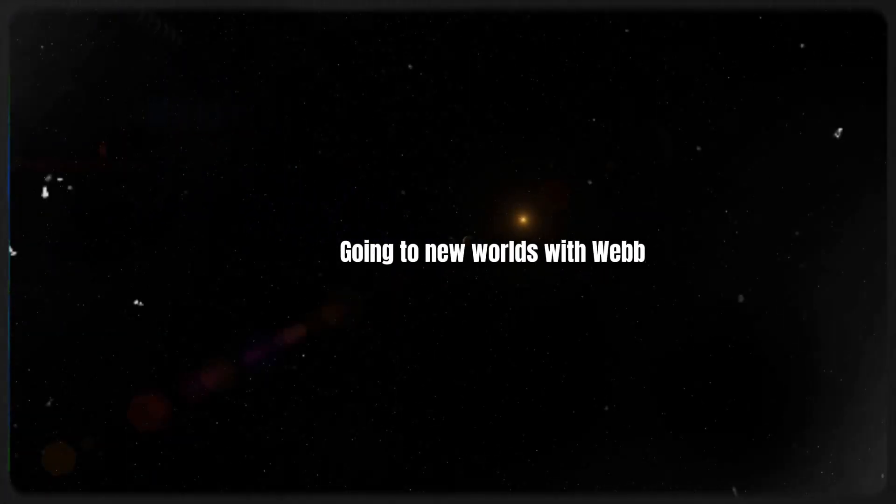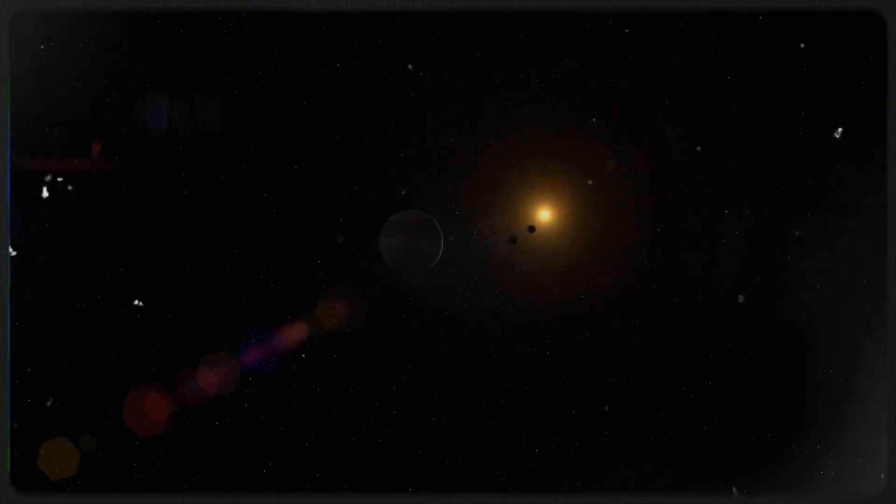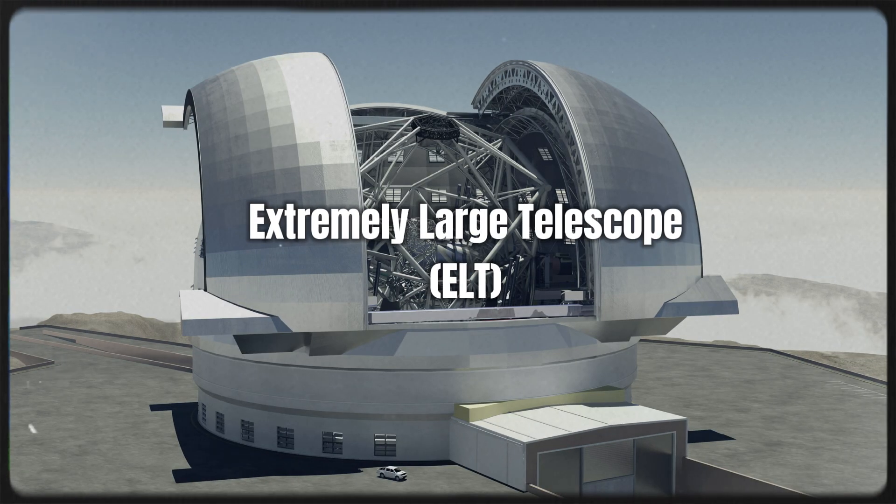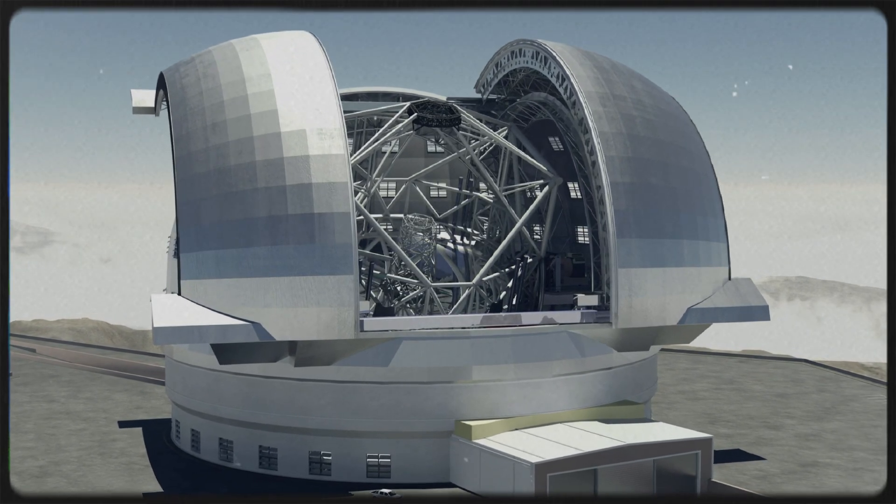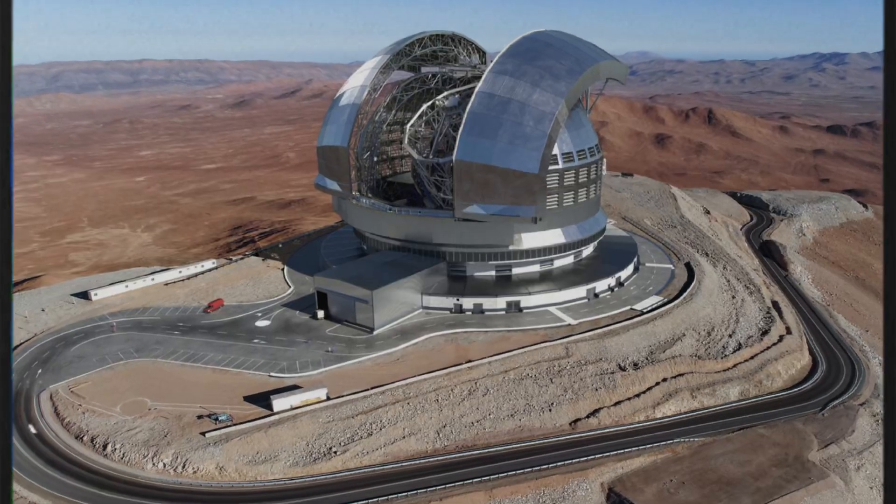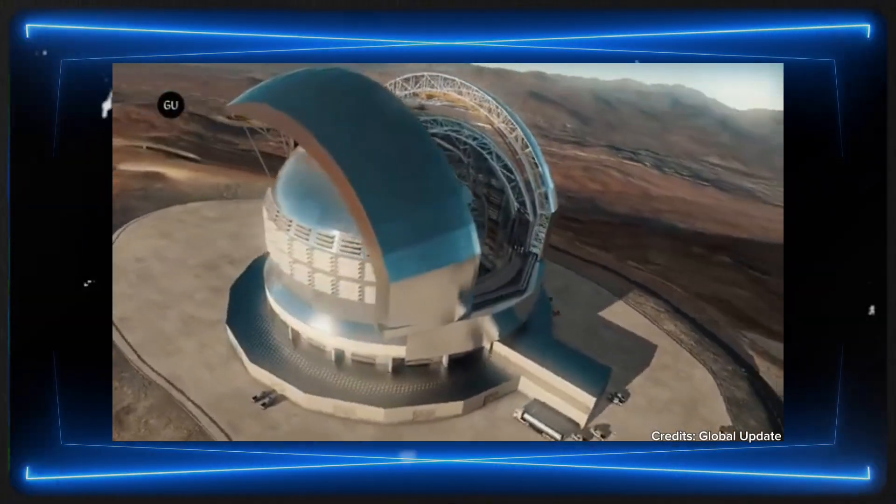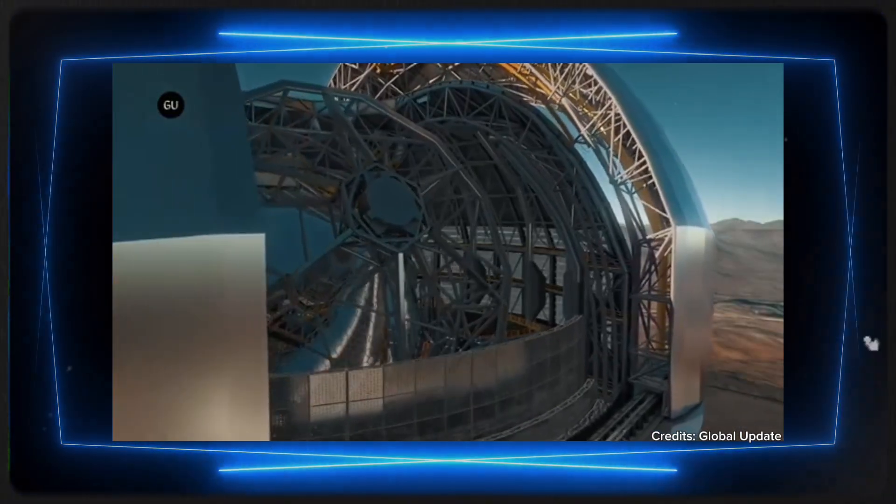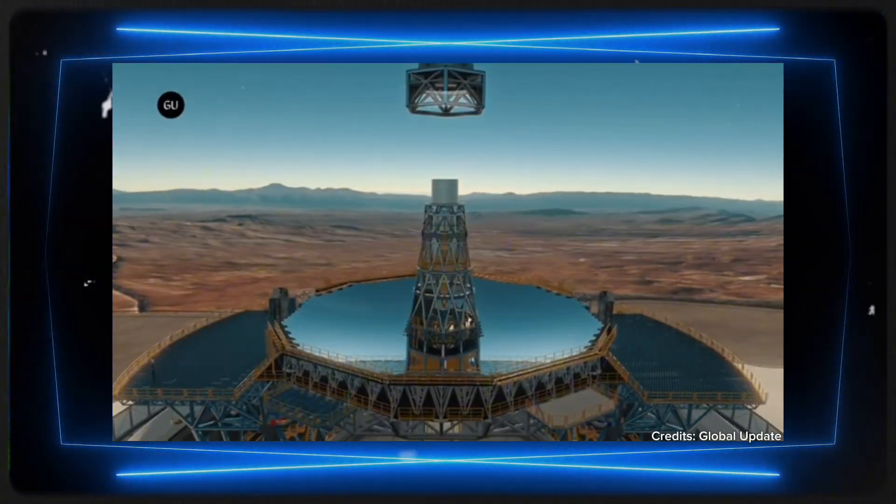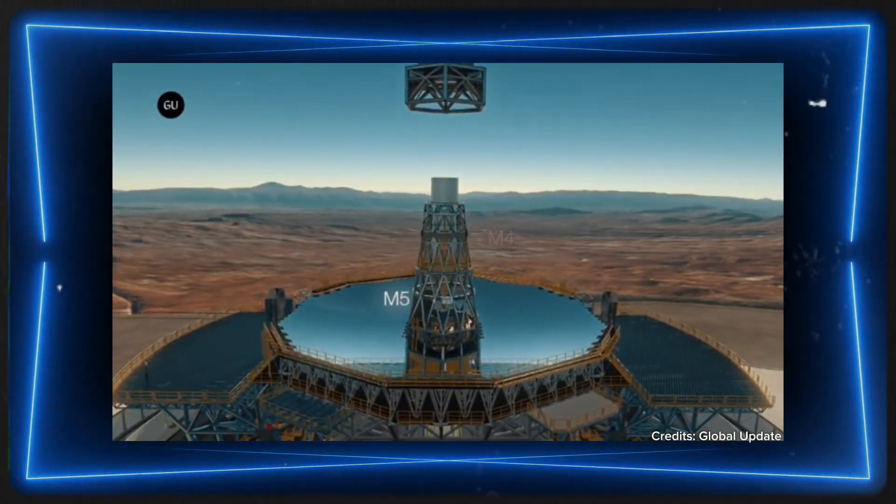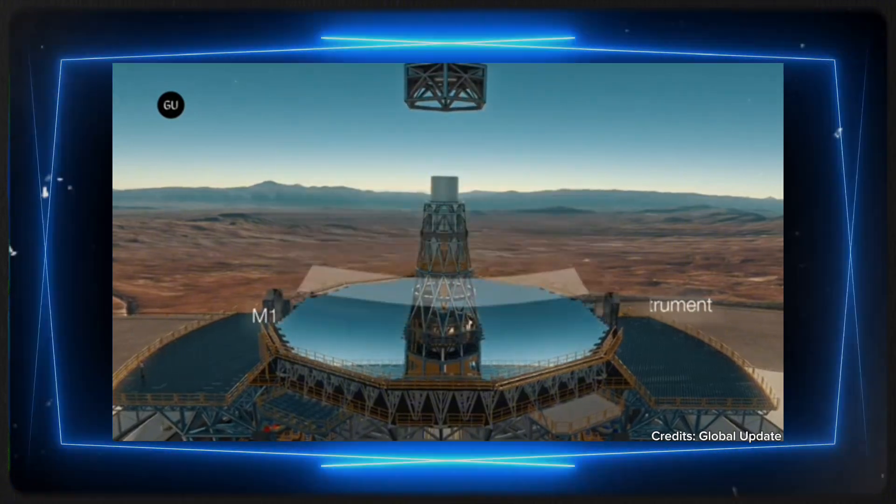The search for distant worlds is expanding as a result of the results from the James Webb Space Telescope, which could one day reveal whether or not we are alone in the universe. Going to new worlds with Webb. Keep in mind that there is a cap on how many habitable worlds can be observed by the James Webb Space Telescope in relation to Earth's proximity. The Extremely Large Telescope, ELT, a ground-based observatory scheduled to start operations in 2028, is being used by astronomers for more in-depth investigations of the atmosphere. The purpose of the ELT is to shed light on the possible habitability of other exoplanets by analyzing their atmospheric systems in greater detail.